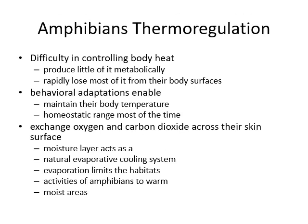Amphibian thermoregulation: amphibians have difficulty controlling body heat as they produce little heat metabolically — their metabolic rate is very low — and heat is rapidly lost through the body surface. They don't have insulating layers: no feathers, no hair, no fat in the body, so they cannot sustain heat inside and heat is rapidly lost to the environment. They have behavioral adaptations to maintain body temperature — sometimes going into the sun for sunbasking, sometimes going near water for moisture and lower temperature.